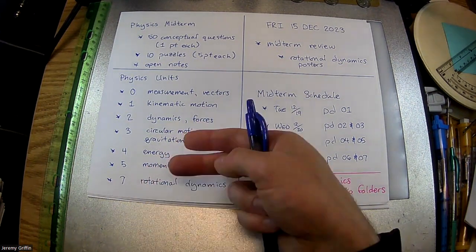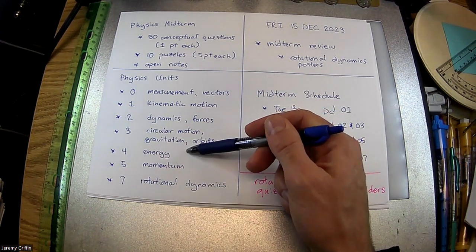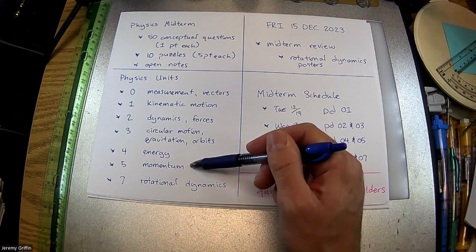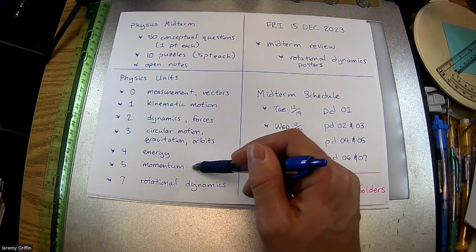You guys saw some graphs for these two also, right? So energy, if you guys saw force versus distance graph, that's probably a work or energy question. If you saw force versus time graph, that's probably an impulse or momentum type question.